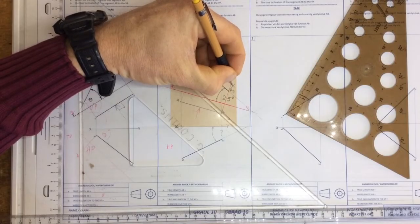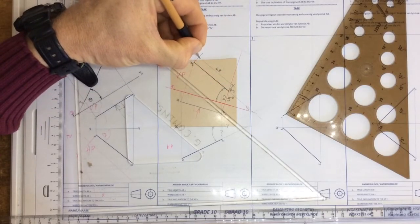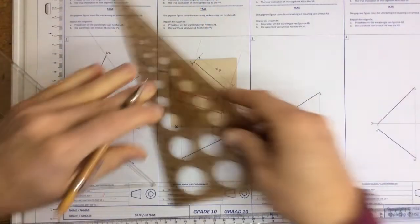And I can write in that I've got 48. Put my little arrowheads on. Arrowheads on.